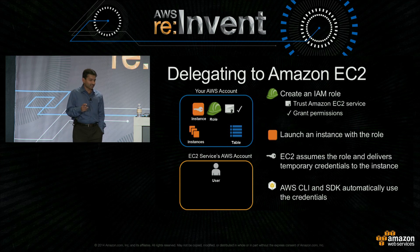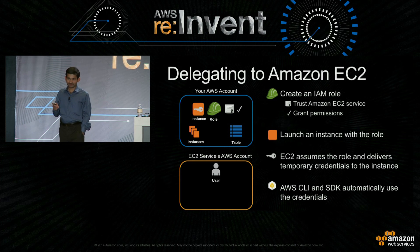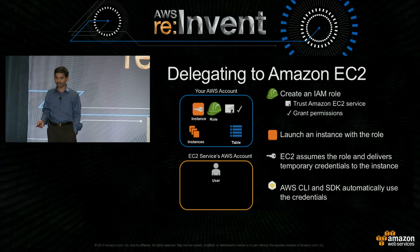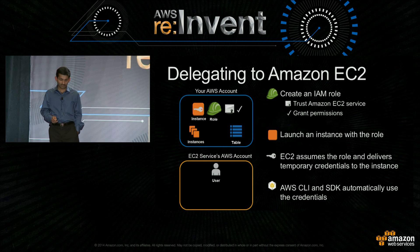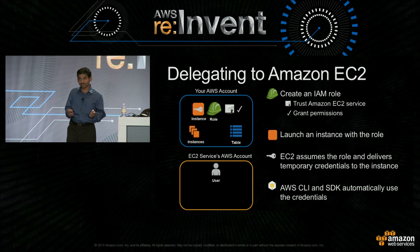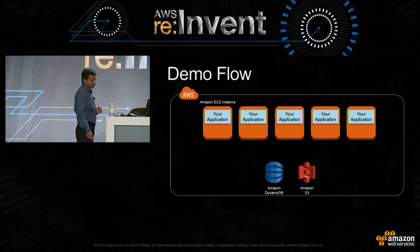And the other thing is EC2 not only delivers the credential to the instance, it keeps on rotating it multiple times a day. Think about it: the credentials are delivered for you, rotated for you, and all you did was launch an instance with a role. I have seen many features in security, but I sincerely believe that this is one of those features that have achieved a great balance of security and usability. So let's see this in action.